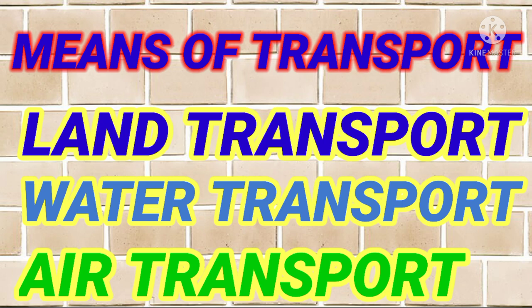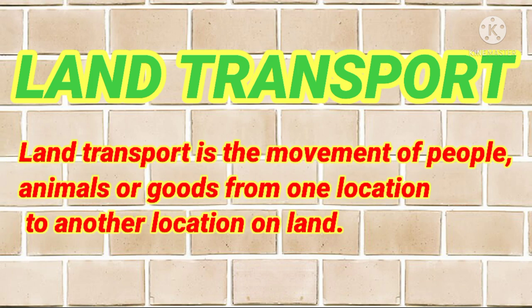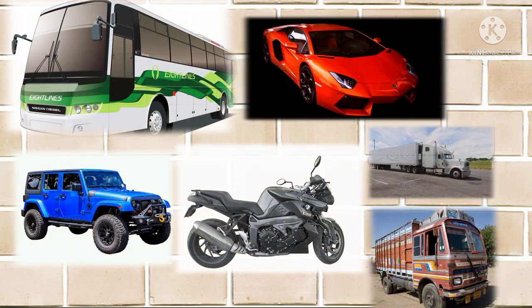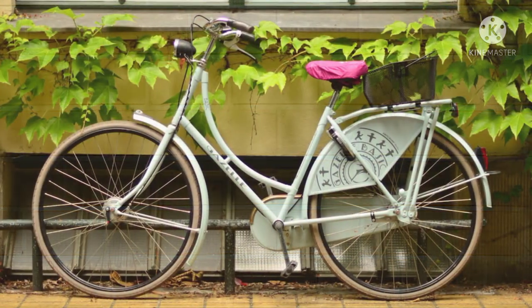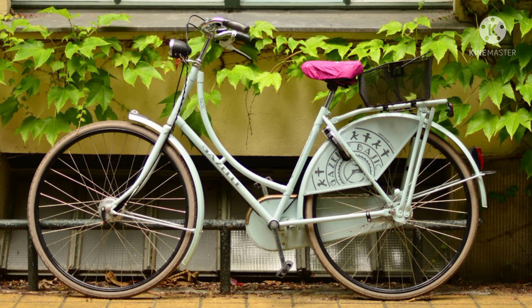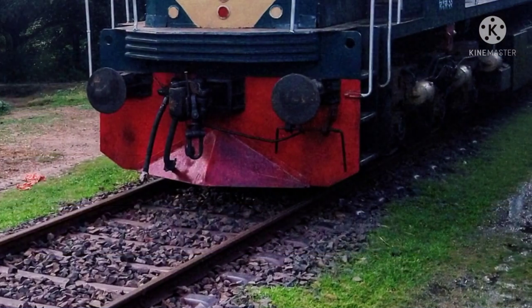Children, let us talk about land transport. Land transport is the movement of people, animals, or goods from one location to another location on land. It is the most common means of transport. Bus, car, jeep, truck, lorry, and motorcycle move on the road. Bicycle also moves on the road — when we want to go to the nearest place, we go by bicycle. Next is train, which moves on rails. This is land transport.